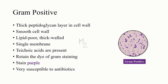Gram positive bacteria have a thick peptidoglycan layer in their cell wall. The cell wall is smooth and straight — there are no curves in it. These are lipid-poor, thick-walled bacteria with a single membrane. There are teichoic acids present in gram positive bacteria. These bacteria retain the dye of gram staining and stain purple. Gram positive bacteria are very susceptible to antibiotics, especially penicillin G. In the picture on the right side, you can see the gram-stained positive bacteria appearing purple.